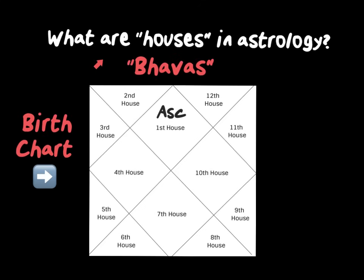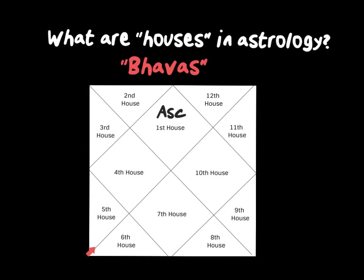So what are the houses in the horoscope? In the Vedic system, we call houses bhavas. In both Western and Vedic astrology, the birth chart will be divided into 12 houses. These bhavas represent areas of human experience. The first house is in the ascending box, in the ascendant — which I spoke about last video. It represents your body, yourself, personality, and lots of things.